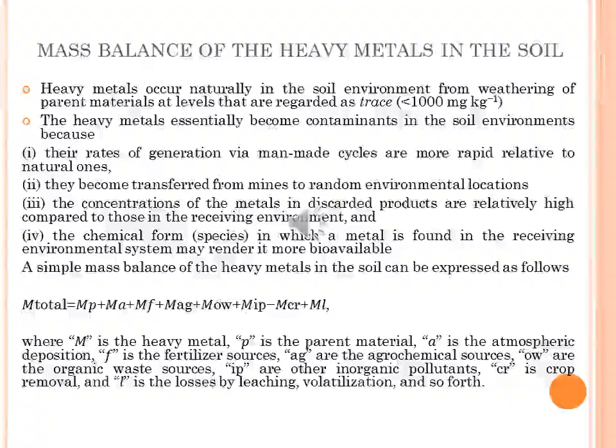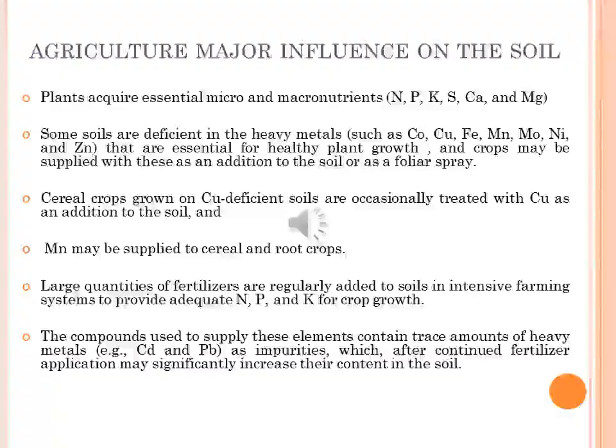It is projected that anthropogenic emission into the atmosphere for several heavy metals is one to three orders of magnitude higher than natural fluxes. Historically, agriculture was the first major human influence on the soil. To grow and complete the life cycle, plants must acquire not only macronutrients — nitrogen, phosphorus, potassium, sulfur, calcium and magnesium — but also require essential micronutrients.